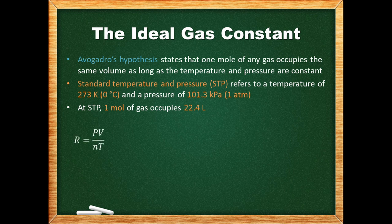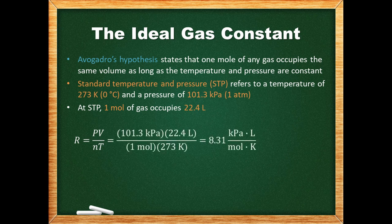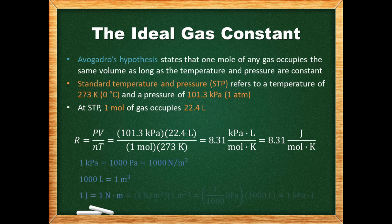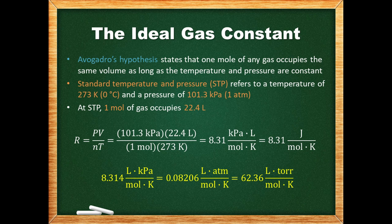We can determine the value of R by substituting 1 mole of gas at STP conditions into the ideal gas equation. Sometimes you'll come across R in units of joules per mole kelvin. This makes sense since a kilopascal equals 1000 pascals (or 1000 newtons per meter squared), 1000 liters equals 1 meter cubed, and a joule equals 1 newton meter. R in terms of joules shows up in enthalpy and is used in AP Chemistry. We could also express R in terms of other pressure units, as shown on the AP Chemistry formula sheet.